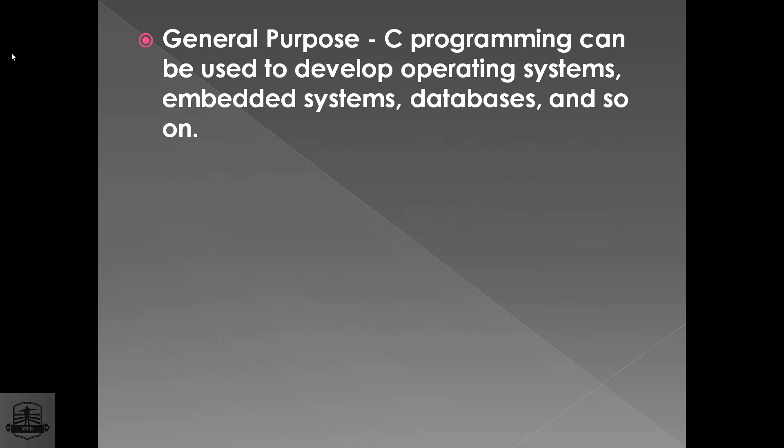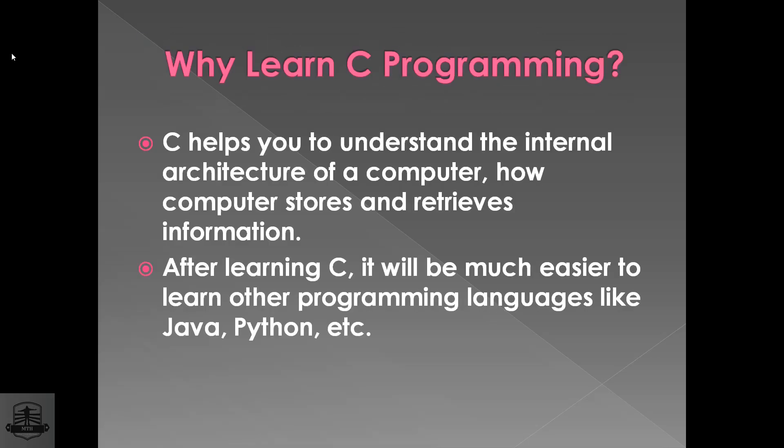Let's look at General Purpose — Powerful General Purpose. C programming can be used for developing Operating Systems, Embedded Systems, and Databases. General purpose means it is common — it can be used for all purposes. You can use it for Operating Systems, Embedded Systems, and Databases.